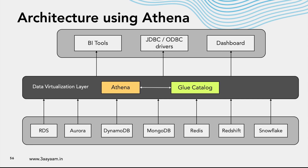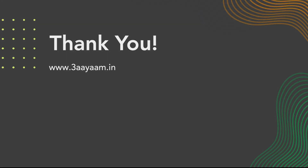Athena is creating a data virtualization layer on top of all the different data sources in our organization. These are the various ways and architectural patterns wherein Athena can be used. That's all for Athena — this is where I'm concluding the Athena chapter. Thanks a lot, and please stay tuned for other sessions.